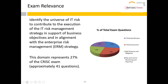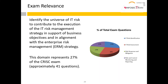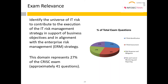Let me give you a quick rundown of what this domain is all about. ISACA has given clear blueprints on how many questions to expect from each domain. Domain 1 has approximately 27% of questions, Domain 2 about 28%, IT risk response (Domain 3) is 23%, and risk monitoring and feedback (Domain 4) is 22%. This is just to show you the importance of each domain.